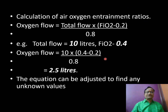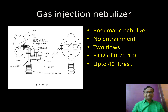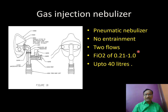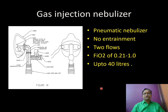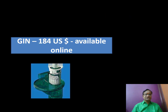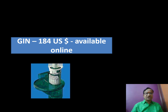The GIN (gas injection nebulizer), or pneumatic nebulizer: there is no entrainment — it uses two separate gas flows. FIO2 of 1.0 (100%) is possible with a total flow up to 40 L/min. It is a fixed performance device. Cost: approximately 15,000 rupees for the GIN 200 model.